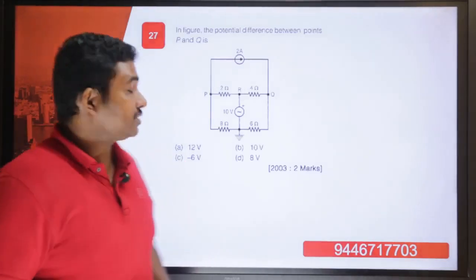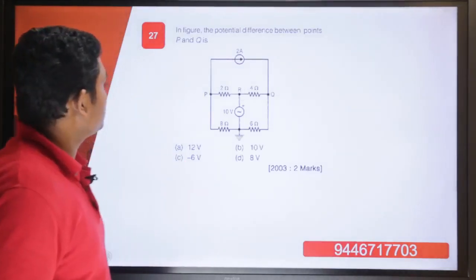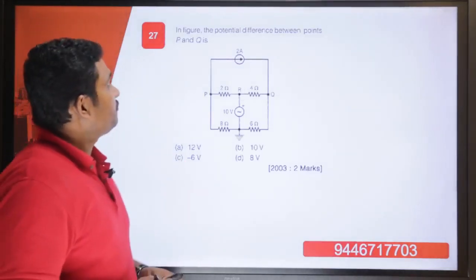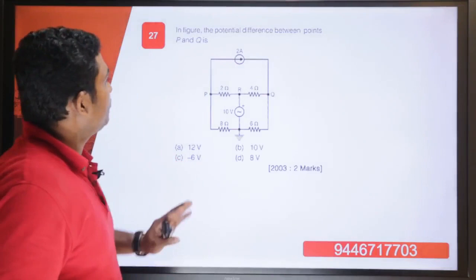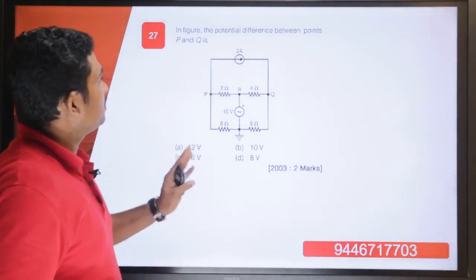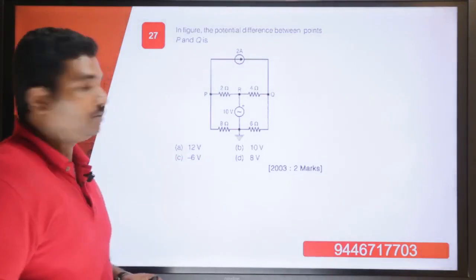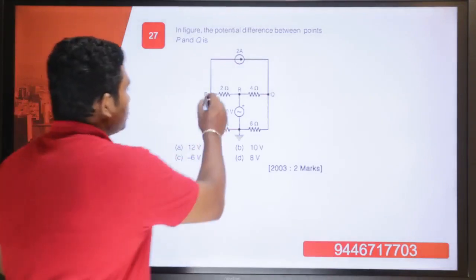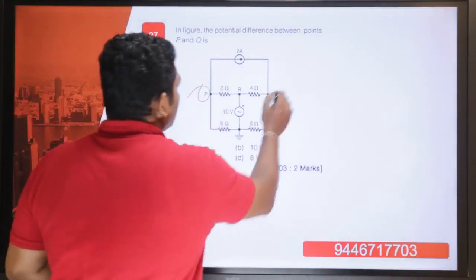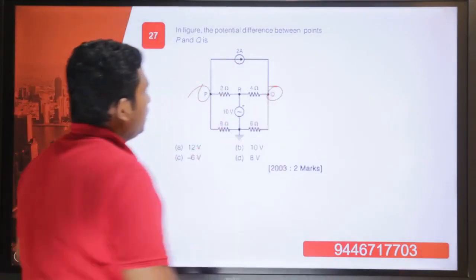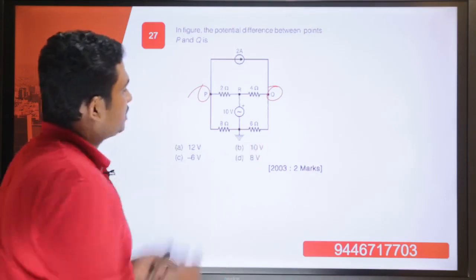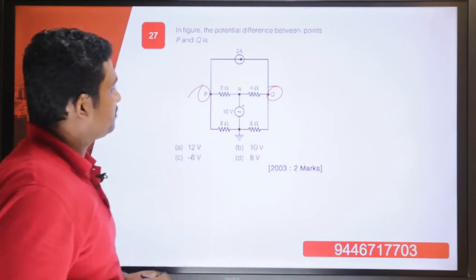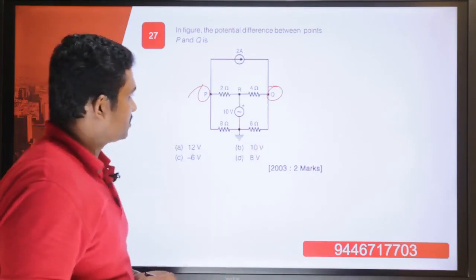Moving to question number 27: in the figure, find the potential difference between the points P and Q. These are two points P and Q and we have to find the potential difference between them.